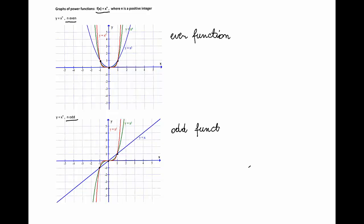Let's look at the behavior of these functions. Notice that if x is between 0 and 1, the value of x^n decreases as n increases. Looking at the graphs — y = x² in blue, y = x⁴ in green, and y = x⁶ in red — between 0 and 1 the graph of x⁶ is below the graph of x⁴, which is below the graph of x². The larger the value of n, the closer to the x-axis the graph will be on the interval (0, 1).